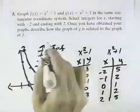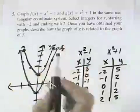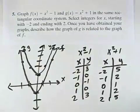And looking at the two, we can see that each point is 2 units above the points for g.